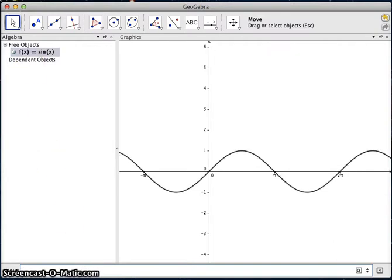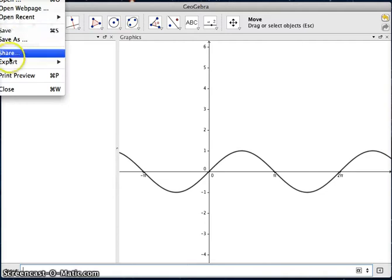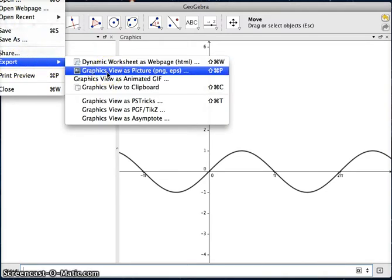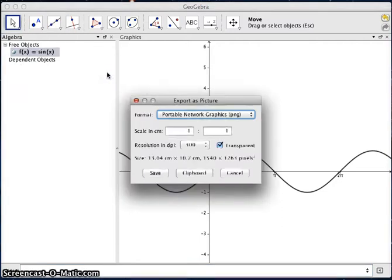If I go up here to the File menu, I come to the Export option, and you'll see Export Graphics View as a Picture. Click on that.